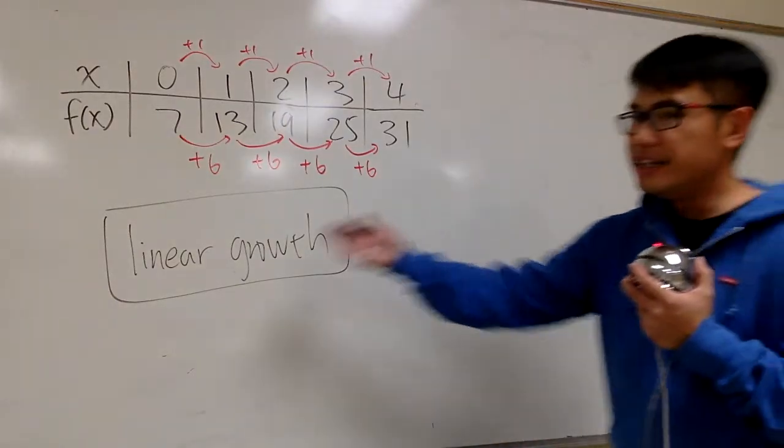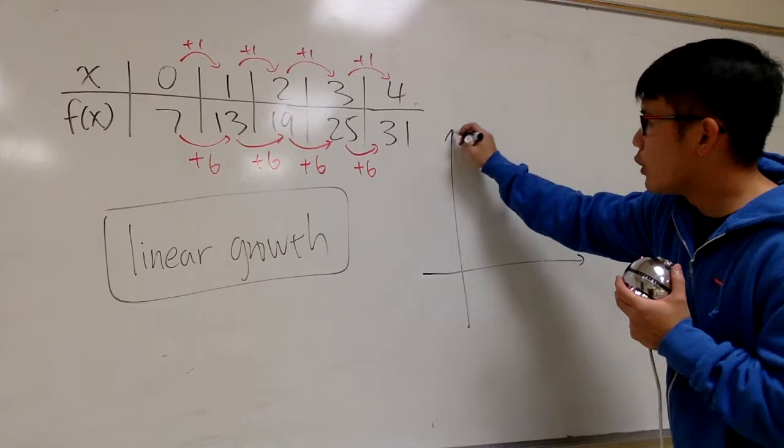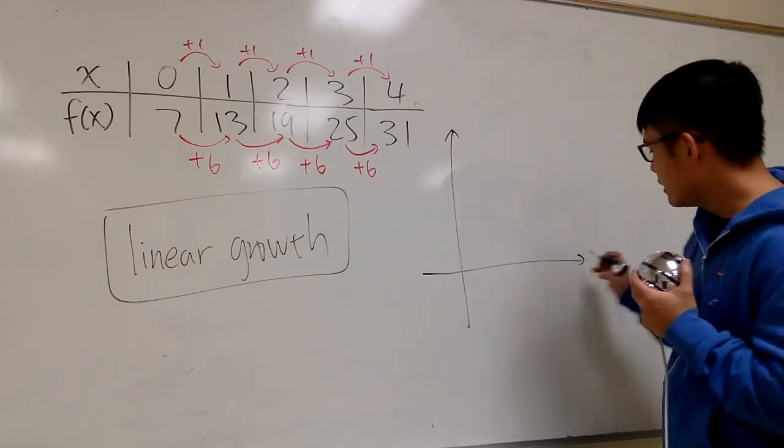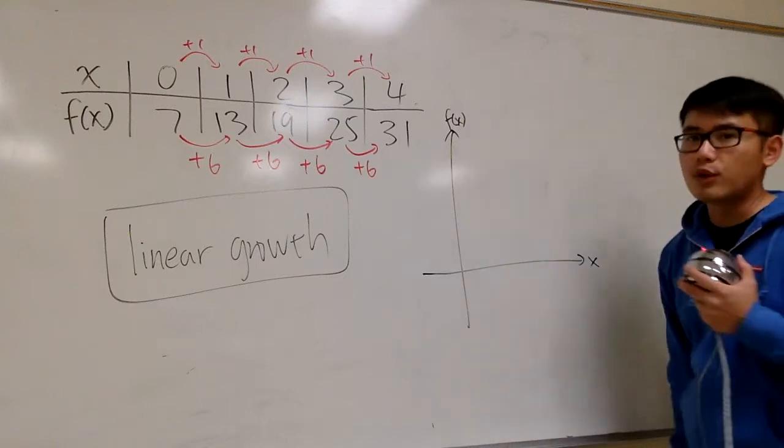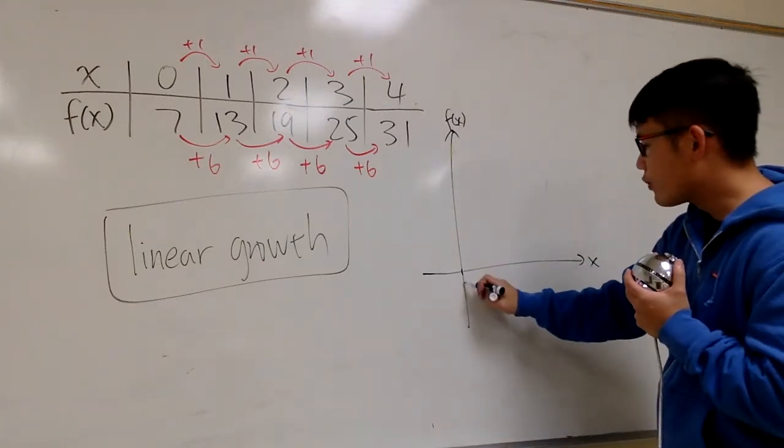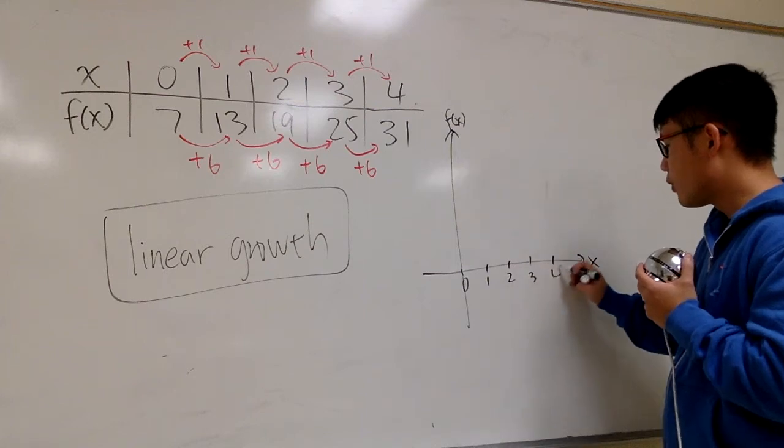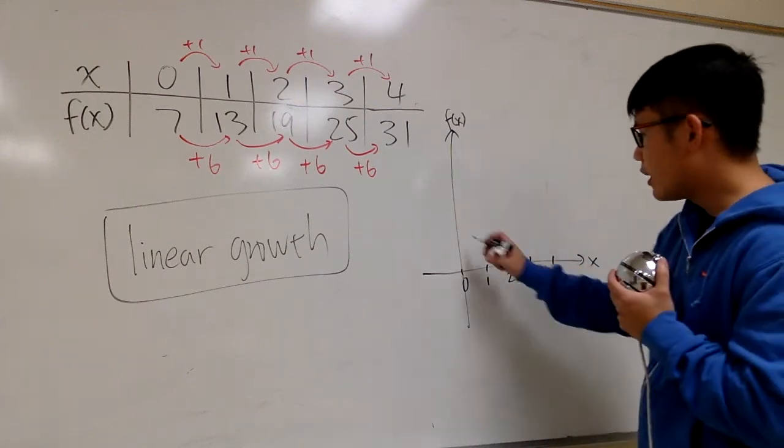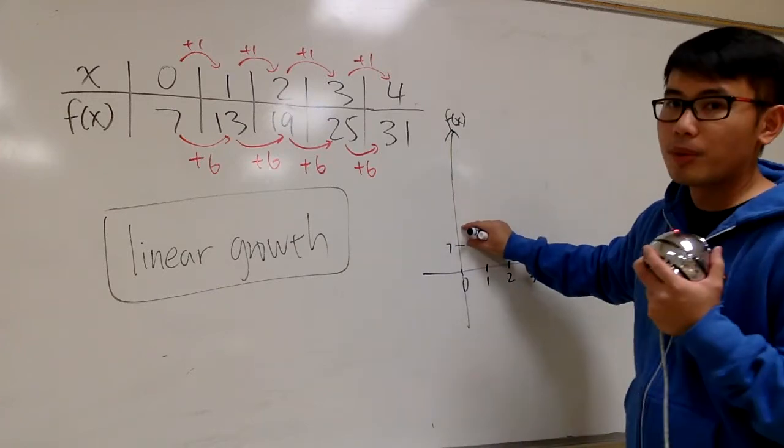And if you want to see why this is linear, well, we can sketch a graph real quick. Let's say this is the x values, and right here for the y-axis, that's the value for f(x). And we are going from 0, 1, 2, 3, 4, and starting from 7. And then each time I'm going by 6.